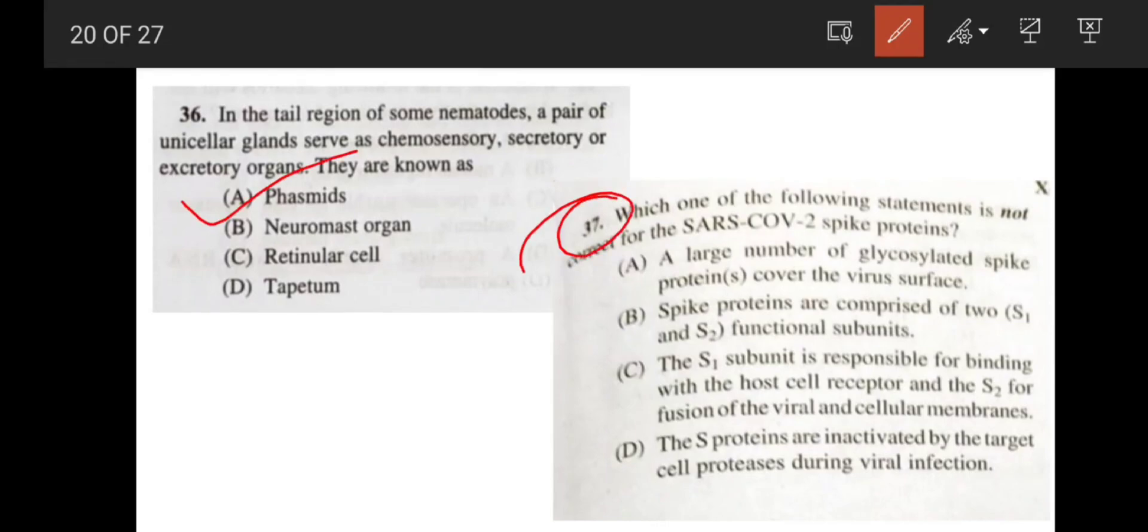Next question. Very, very important. Which one of the following statement is not correct for the SARS-CoV-2 spike protein? Let's see the options. A large number of glycosylated spike proteins cover the virus surface. Yes, it is correct. Next, spike proteins are comprised of two functional subunits S1 and S2. Yes, it is also correct. The S1 subunit is responsible for binding with the host cell receptor. Yes, it binds to the ACE2 receptor of the host and S2 for the fusion of the viral and cellular membranes. Yes, it is also correct. Next, the S proteins are inactivated by the target cell protease during viral infection. It is not correct. So option D, your correct answer will be option D.